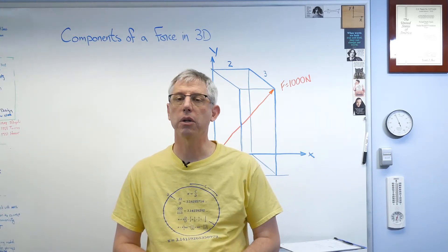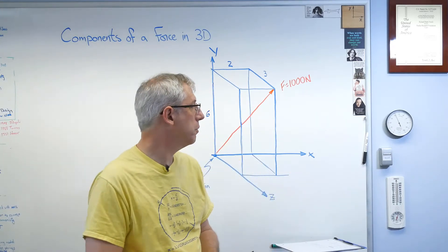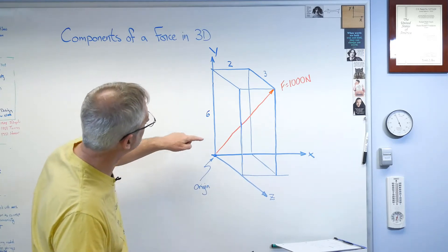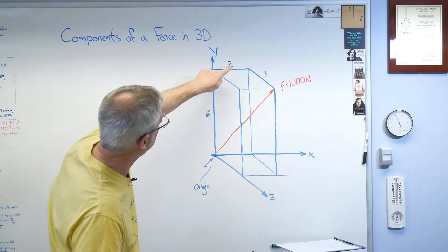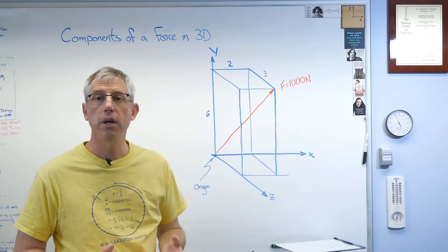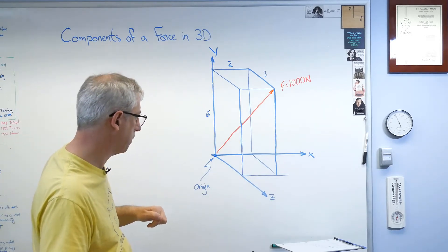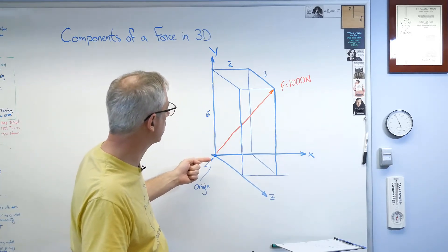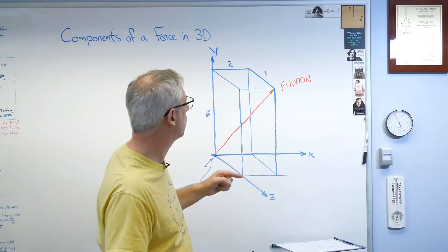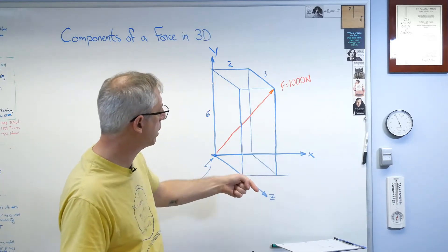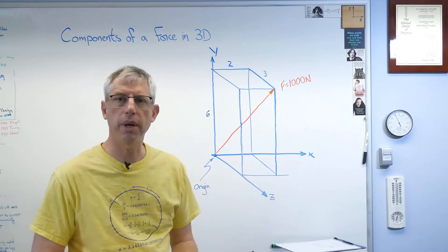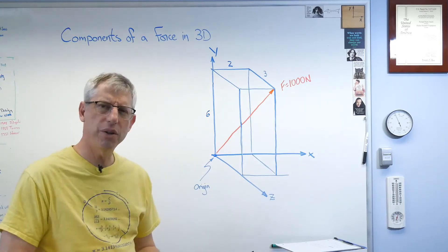So let's start by looking just at the forces. Now it took me a couple of tries to get this, but I drew a force in red, and I drew this box around it so you can see where the components are. Now I've got the coordinates written in x in the horizontal direction, y in the vertical direction, and z kind of coming out of the board.